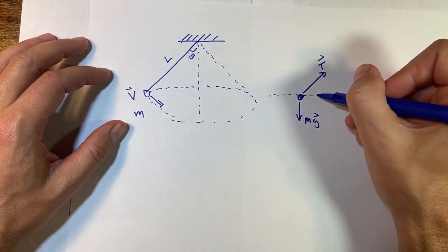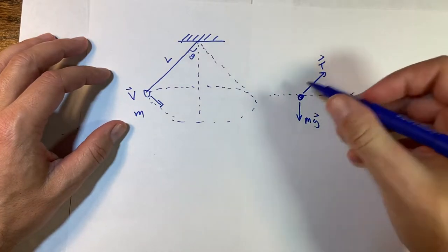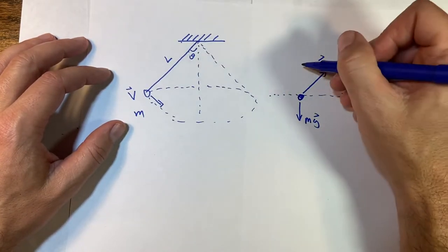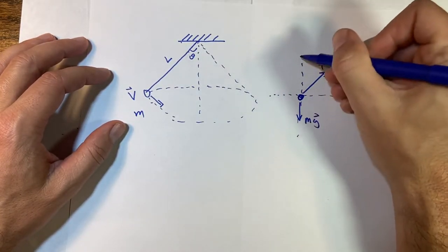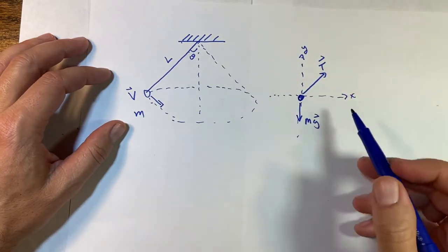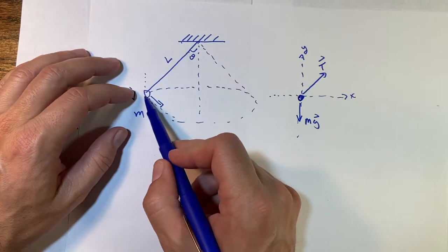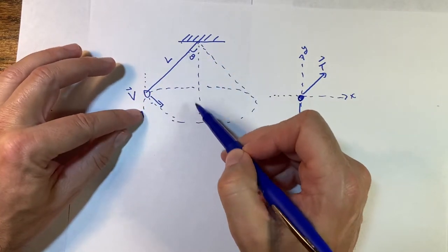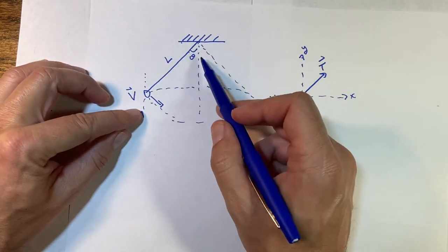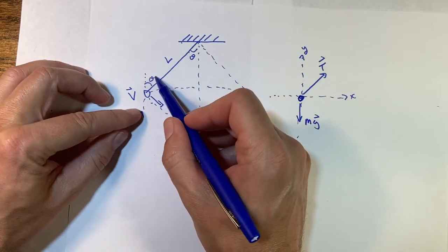So other than that I'm going to pick this as my x-axis. Those are my only two forces. That's my x-axis and that's my y-axis. So now just a little geometry here. If I draw this line right here, these two lines are parallel and so I have a line intersecting parallel lines. So this is also theta.